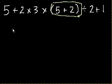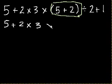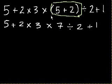So then we get 5 plus 2 times 3 times, now what's 5 plus 2? We did the parentheses first. Times 7 divided by 2 plus 1. Do we have any parentheses left? No. So what do we do next?